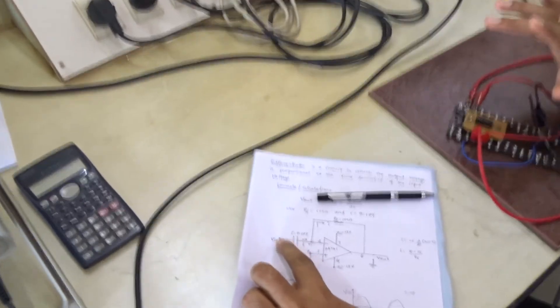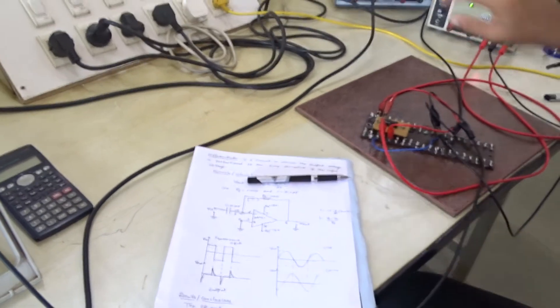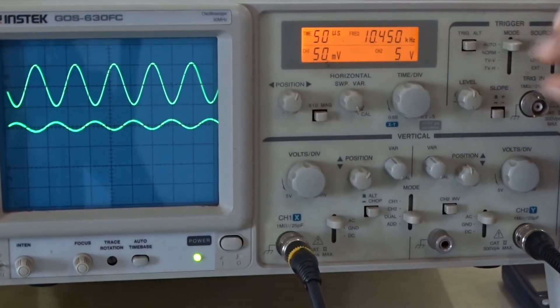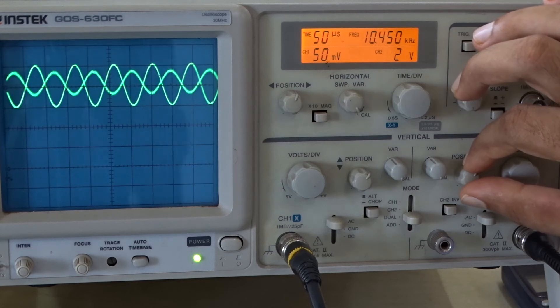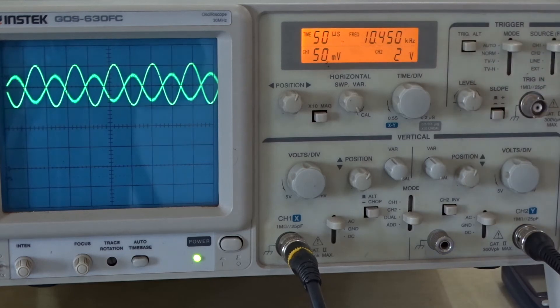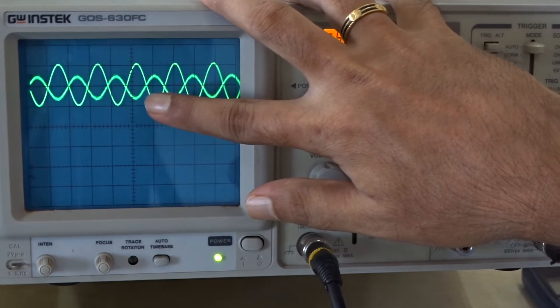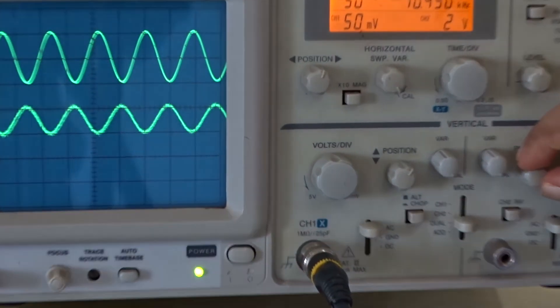Now I will give a sine wave as the input voltage and note the output using the CRO. Channel 1 of the CRO is used for the input signal — I have set the input to 0.1 volt. Channel 2 is used for the output, set to 2 volts per division. You can observe there is a phase change between input and output. A sine wave input is given and there is a 90-degree phase change — the output is a cosine wave.